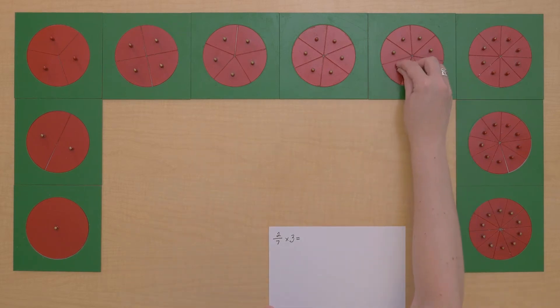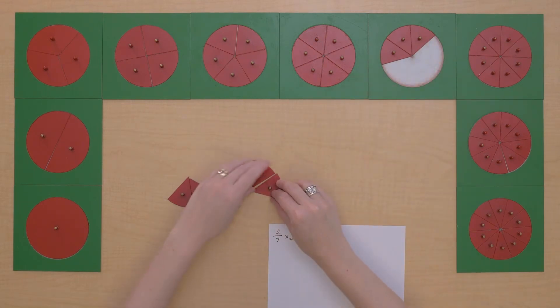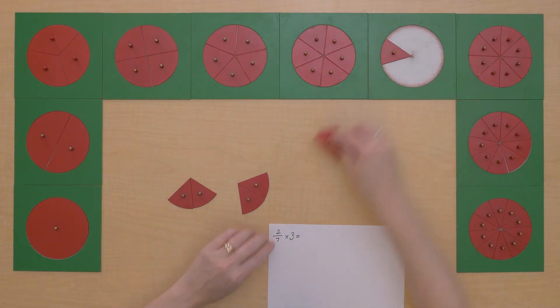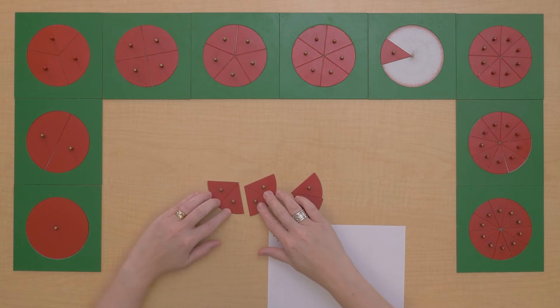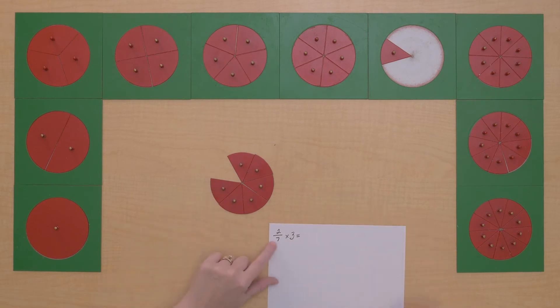So here's 2/7 one time, 2/7 two times, and 2/7 three times. Let's put that all together and calculate what we have. So 2/7 times 3 gives us 6/7.